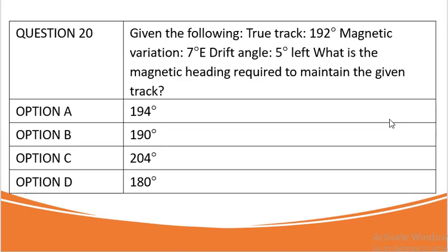The question states: given the following, true track 192 degrees, magnetic variation 7 degrees east, drift angle 5 degrees left, what is the magnetic heading required to maintain the given track? The options are given below.